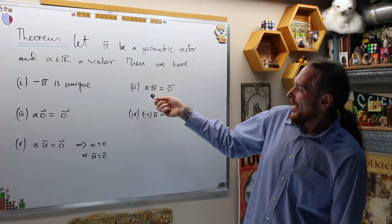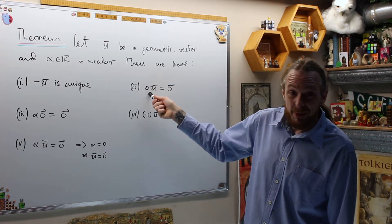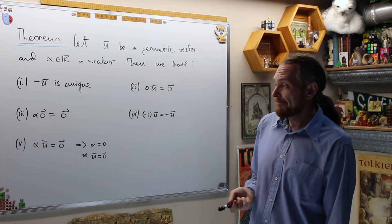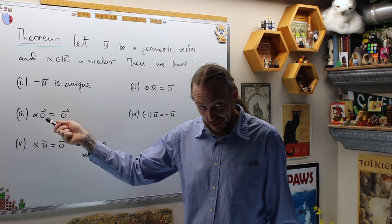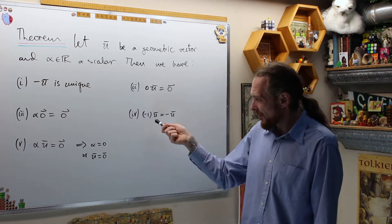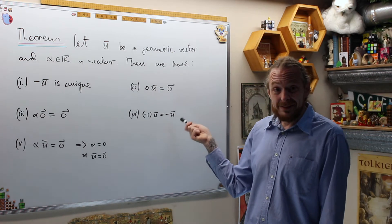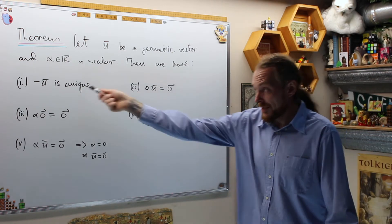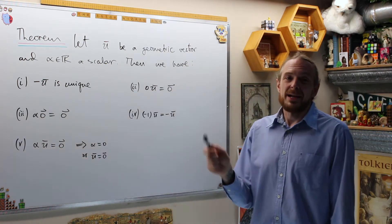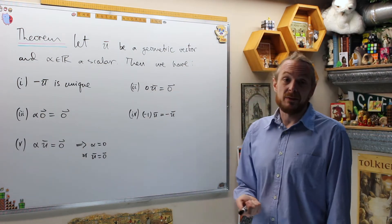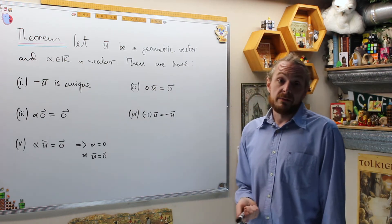Also, if you multiply any arbitrary vector, whether it's zero or not, by the number zero, you're always going to get the zero vector. If you take any arbitrary real number and multiply it by the zero vector, you're also going to get the zero vector. If you multiply a vector by negative one, that is the additive inverse of that vector, which is unique. And then if you have a scalar multiple of a vector that gives you the zero vector, either alpha is the zero number or U is the zero vector.